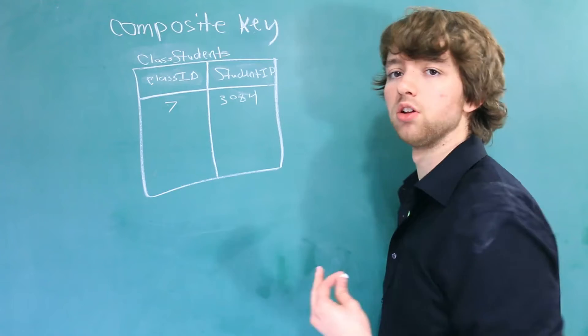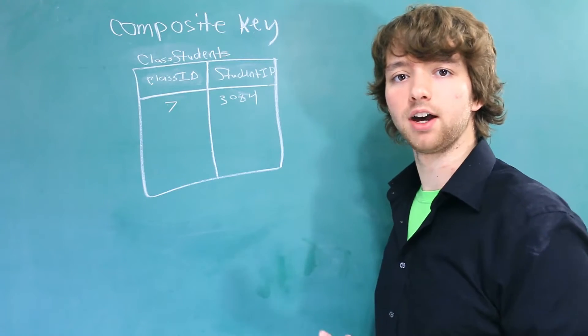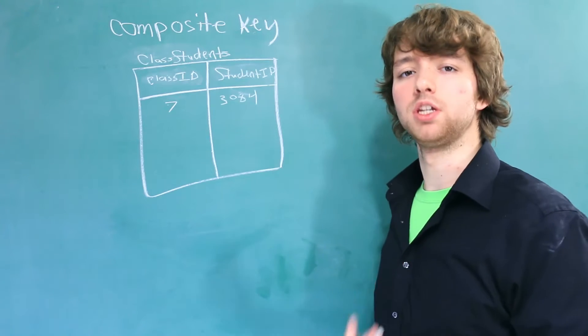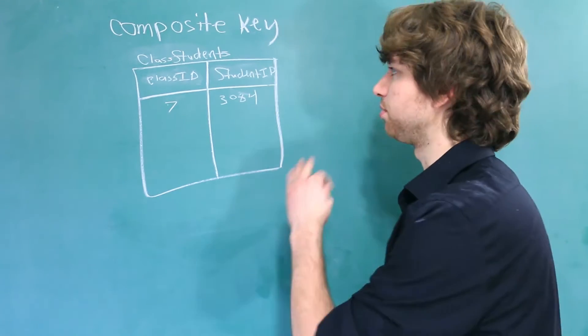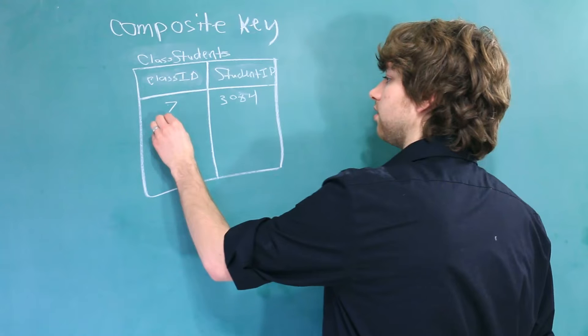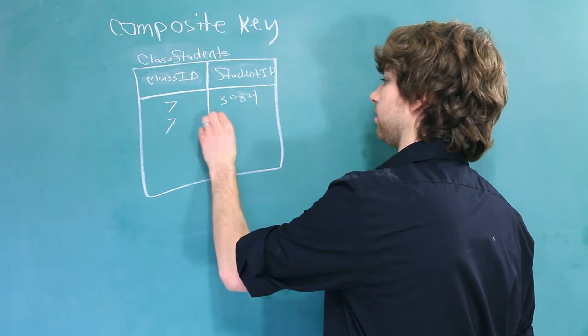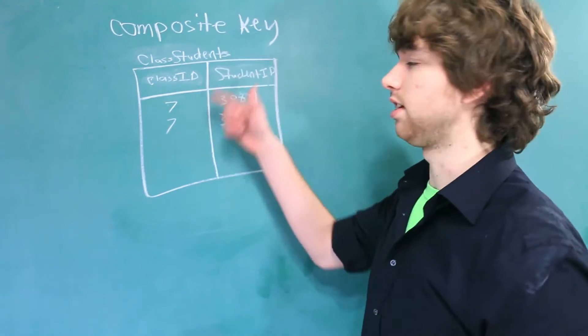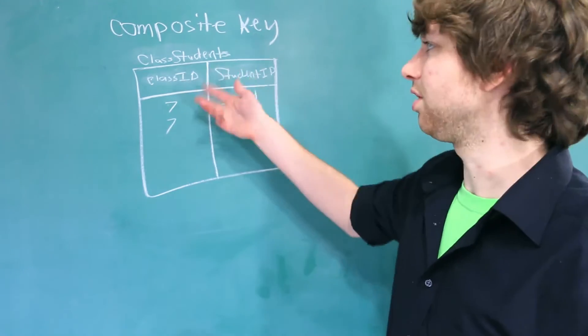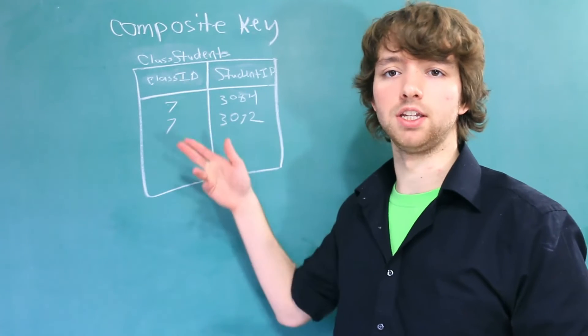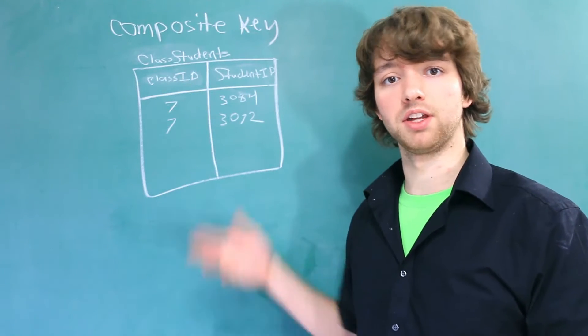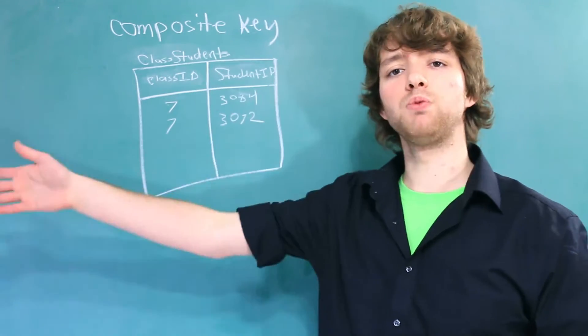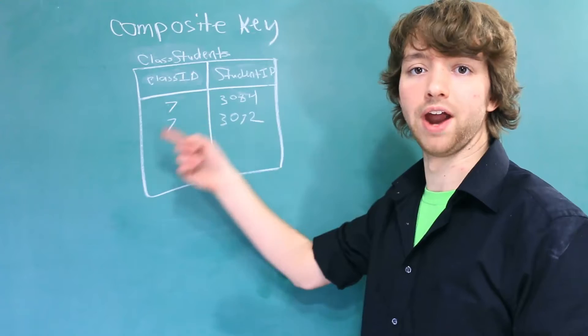Could we use either of these columns to uniquely identify every single row? Well as we have it now, no we couldn't. That's because multiple students can take a class. So we could have 7 and then 3072. Now the class ID is repeating, so we couldn't use the class ID to uniquely identify each row. That's because there's repeating values. So if I said, grab the one with the ID of 7, you wouldn't know which row to grab.